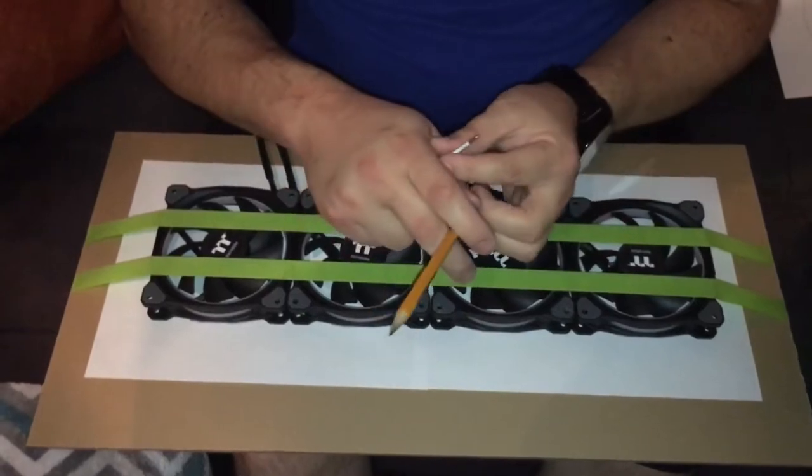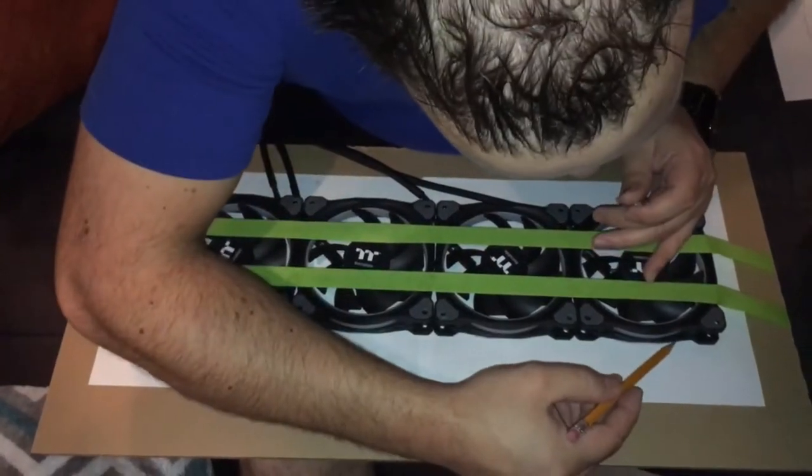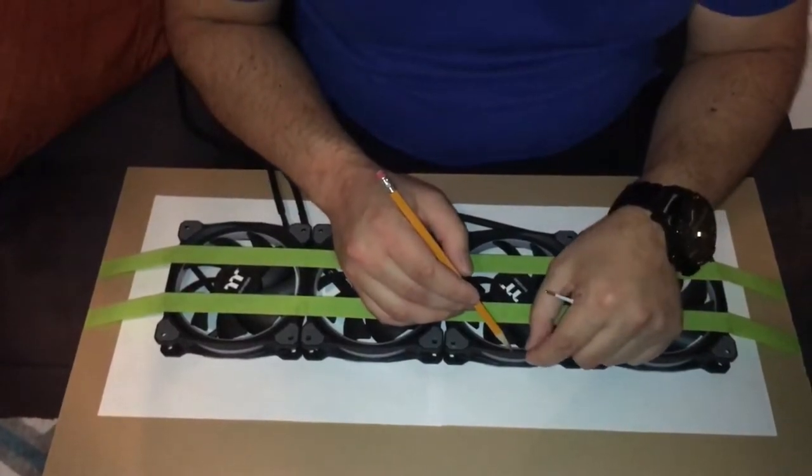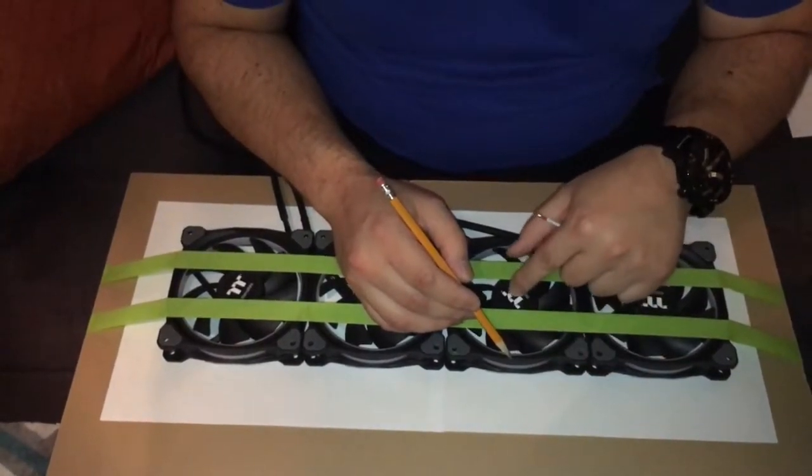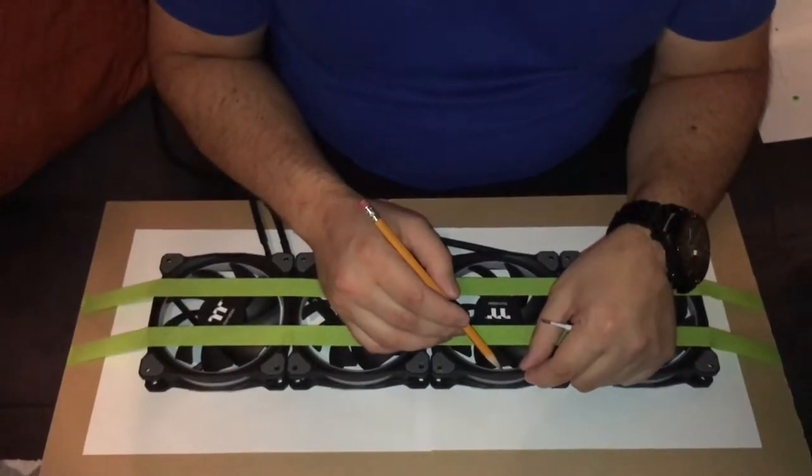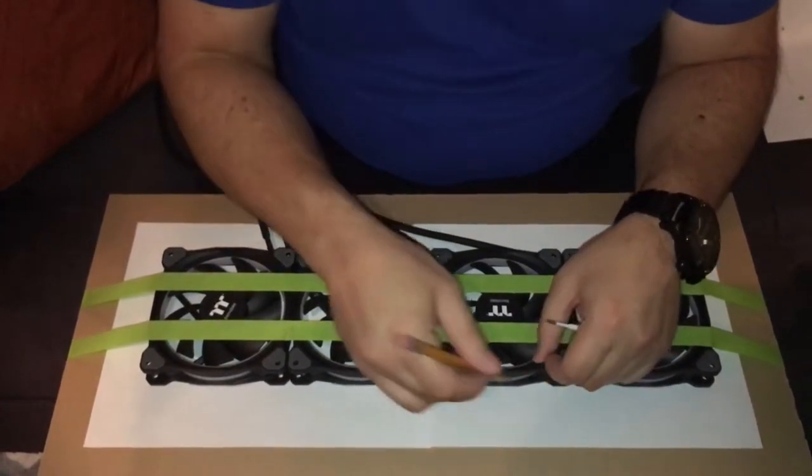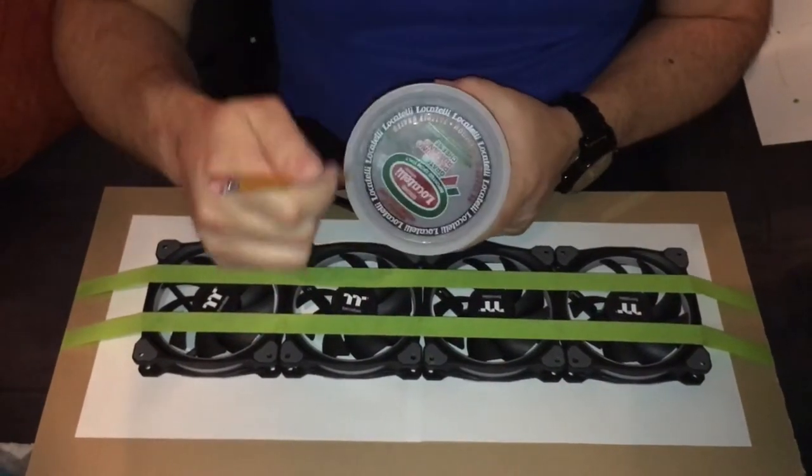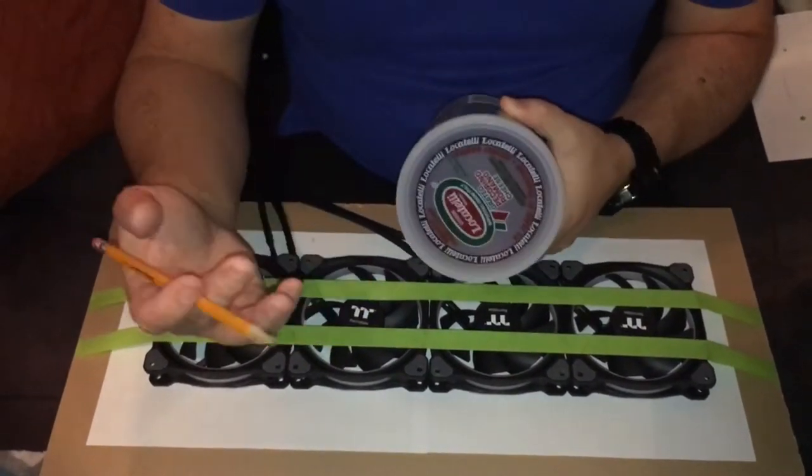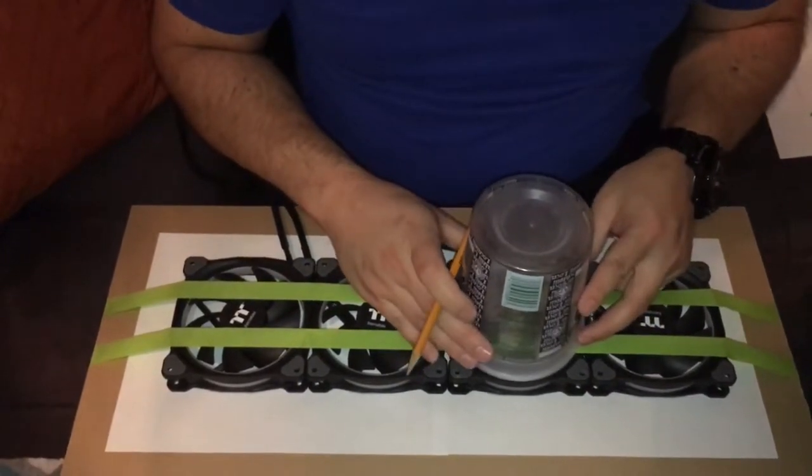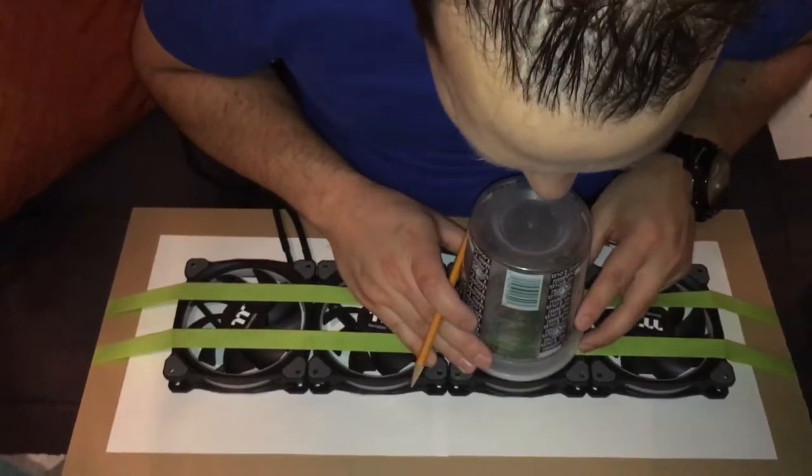Then I take just a regular pencil and mark the outside of the fans so I know where the edge is. In this case, on these TT fans, the premium ring plus fans, there's about a sixteenth of an inch of plastic here. So if I mark the outside, I'll come back with this—you could use a protractor—and I'll set it down.